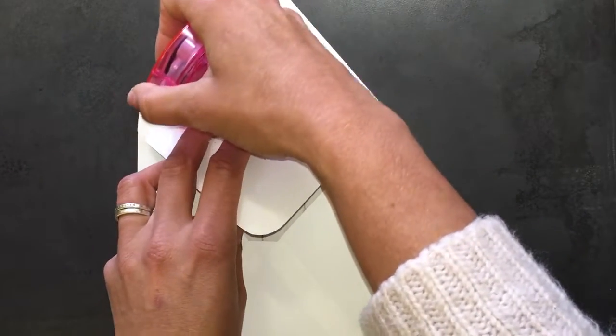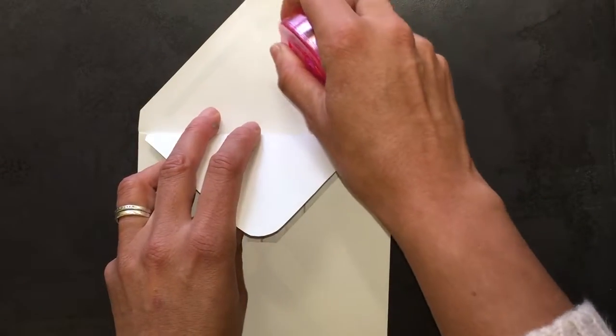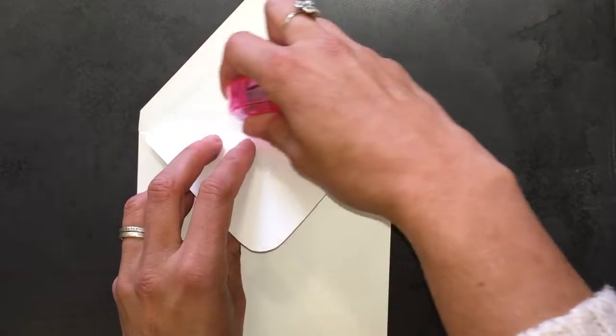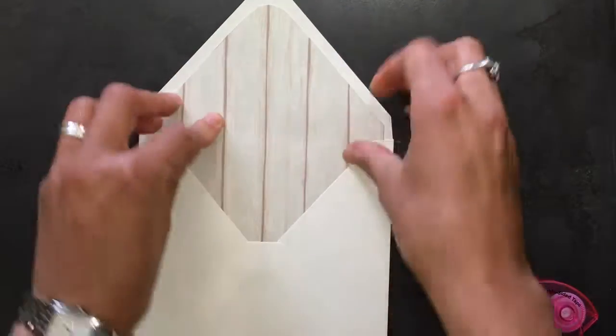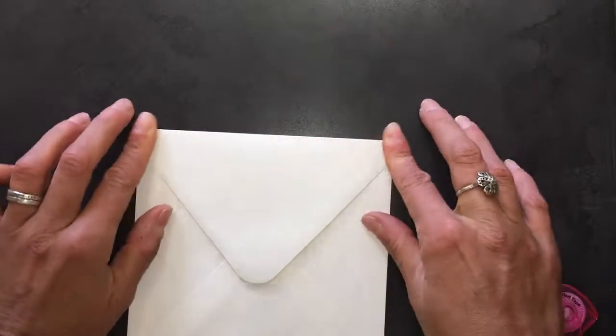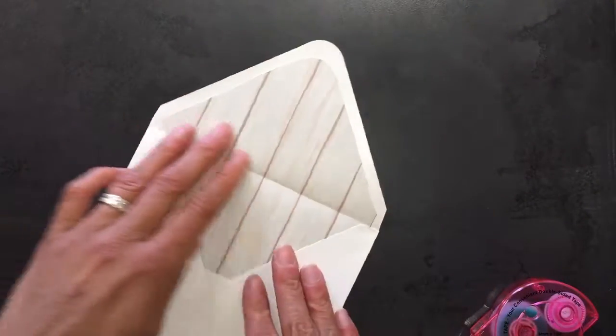You can then run tape around the inside edge of your flap, press the liner into place, fold the envelope down and you're done!